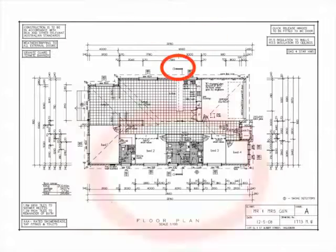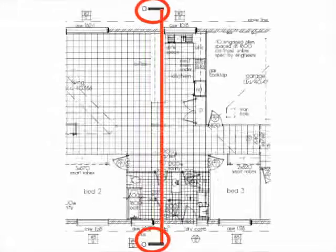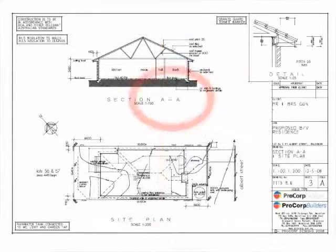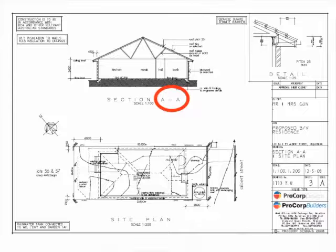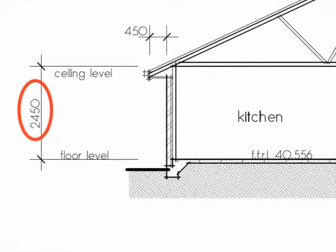We see here indicating the floor plan, the letters A and A. This represents where the plan is cut through for a section view. Here we see the section view, A-A. Within the drawing, we can identify that the ceiling is 2.45 metres.